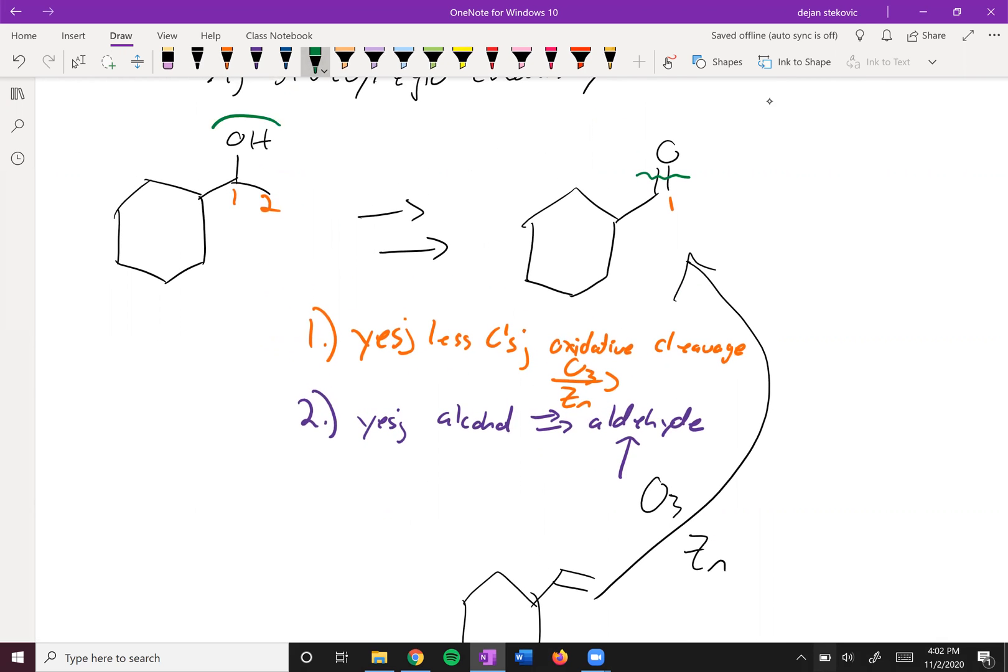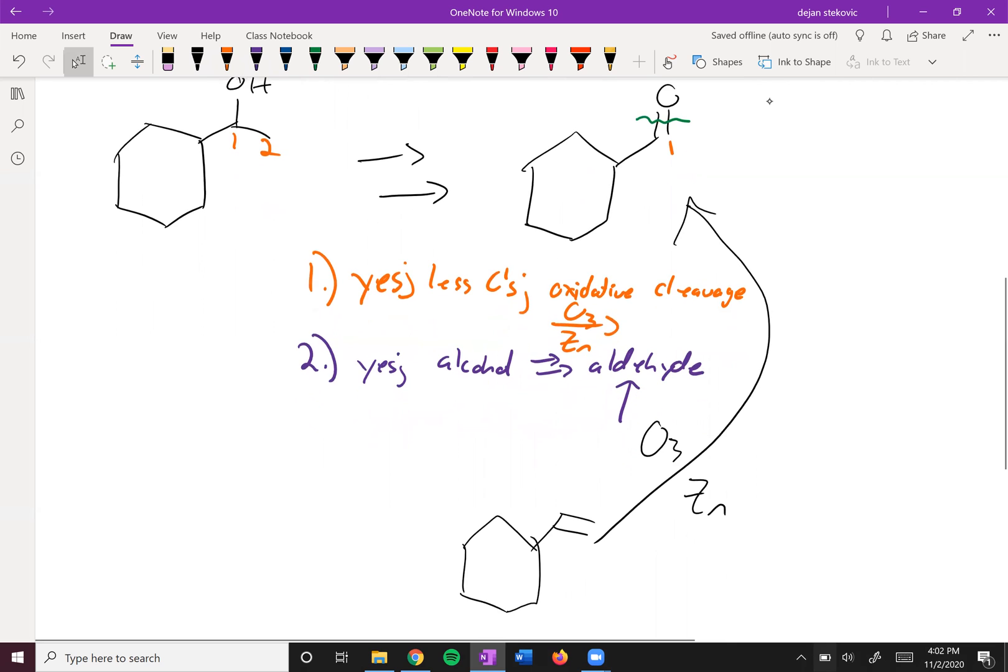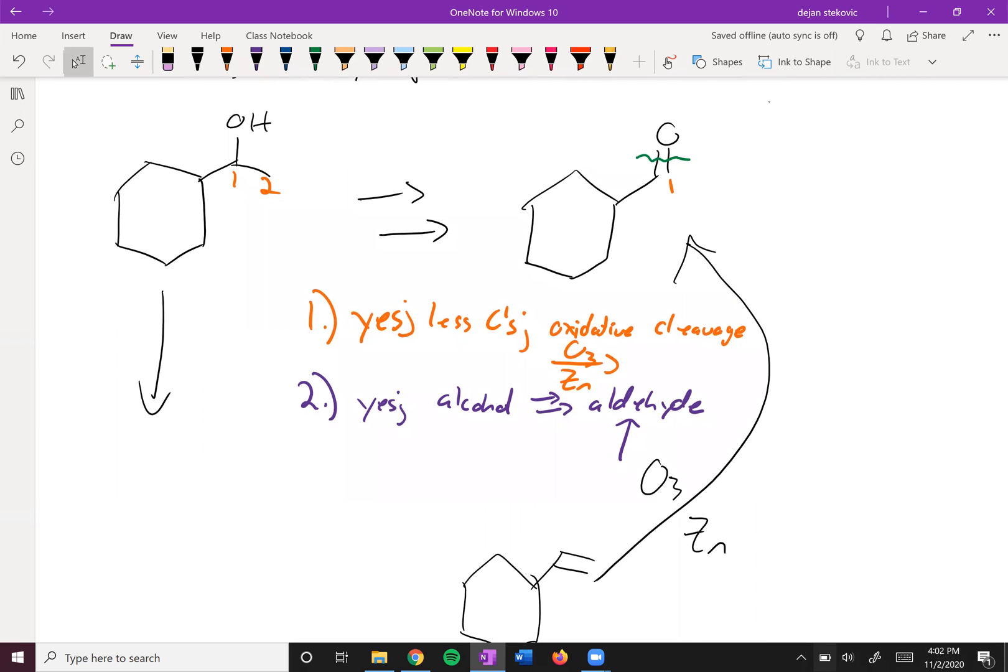Over here we have this alcohol. There's different things that we learned how to do with alcohols. One is a dehydrogenation, but if you think about the mechanism there, that's going to form the more substituted alkene, whereas here we want the less substituted alkene.